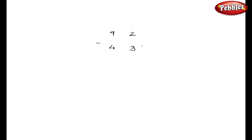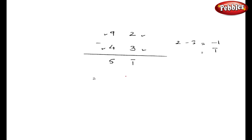In the second example, I will take 92 minus 43. Give the strokes in your mind. As a first calculation, 2 minus 3 is minus 1, so we write bar 1. Then 9 minus 4 is 5. As a second step, we convert bar 1: which number subtracted from 10 gives 1? That is 9. So bar 1 equals 10 minus 9, giving us bar 1 and 9, with 5 carried. Subtract the bar 1 from 5, giving 4. So the answer is 49.